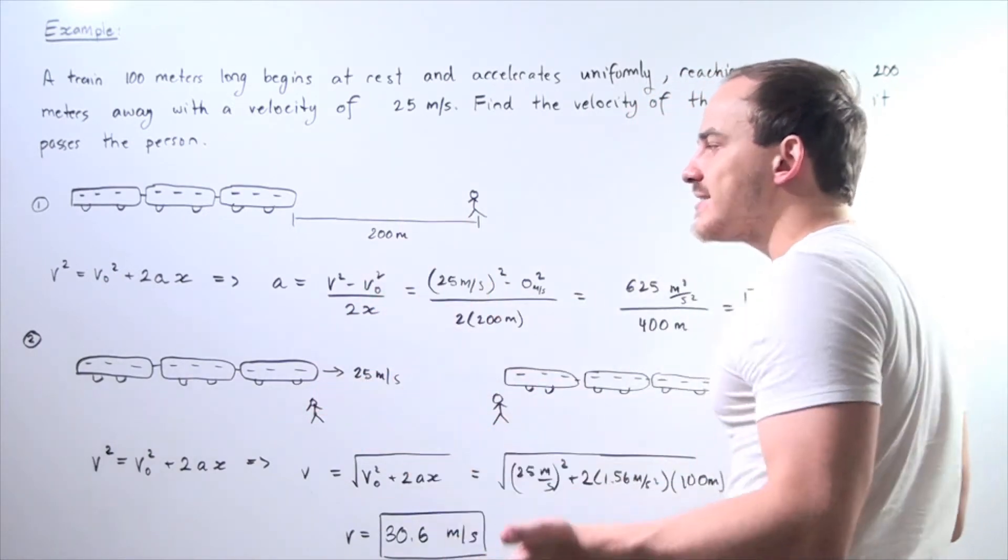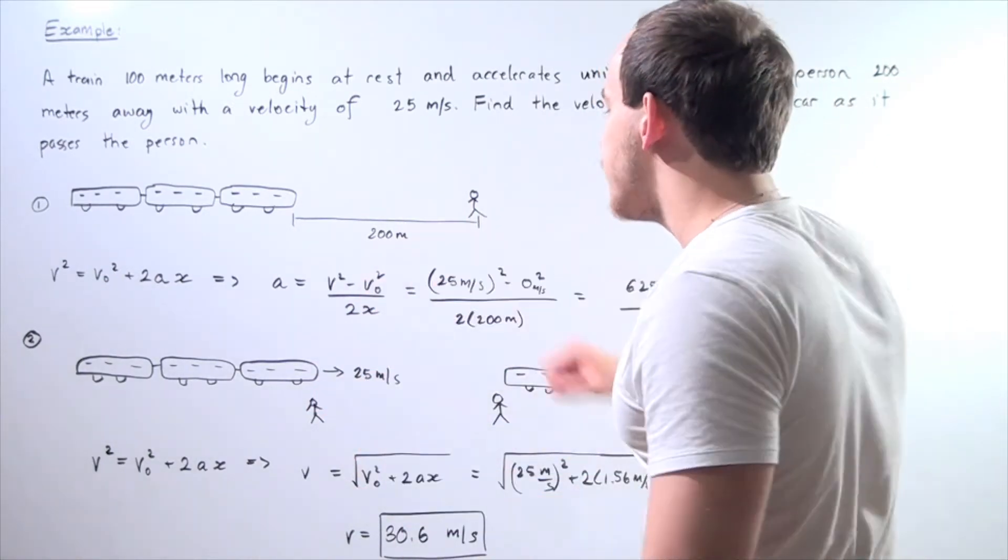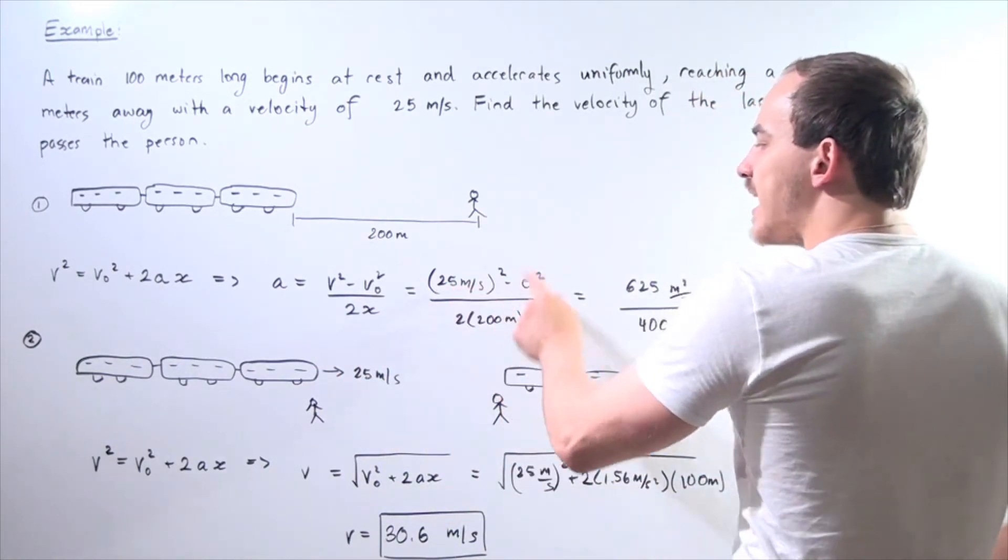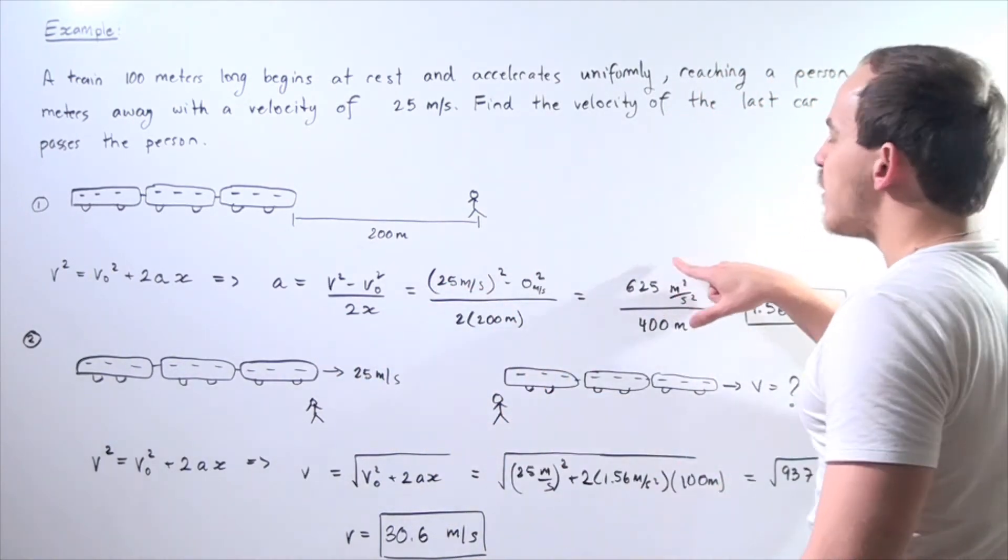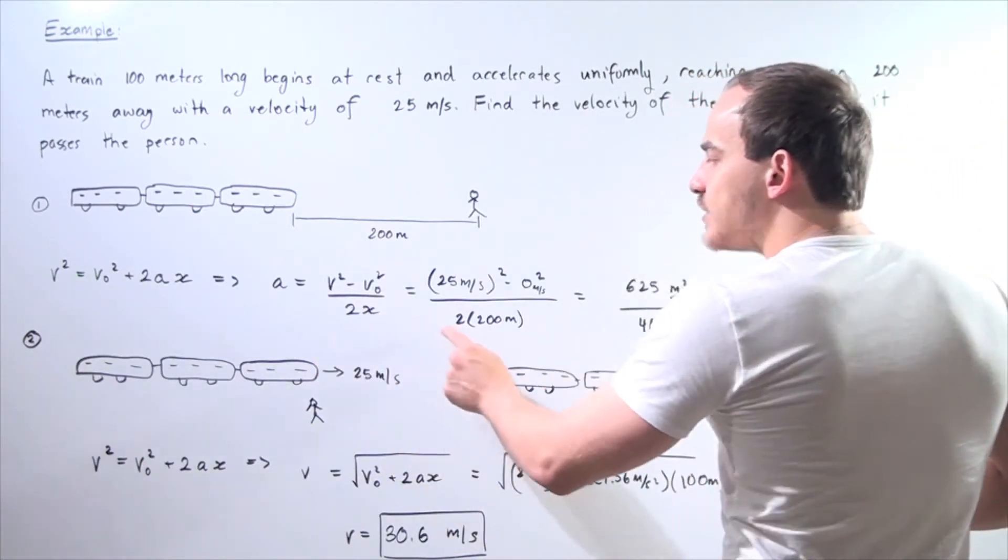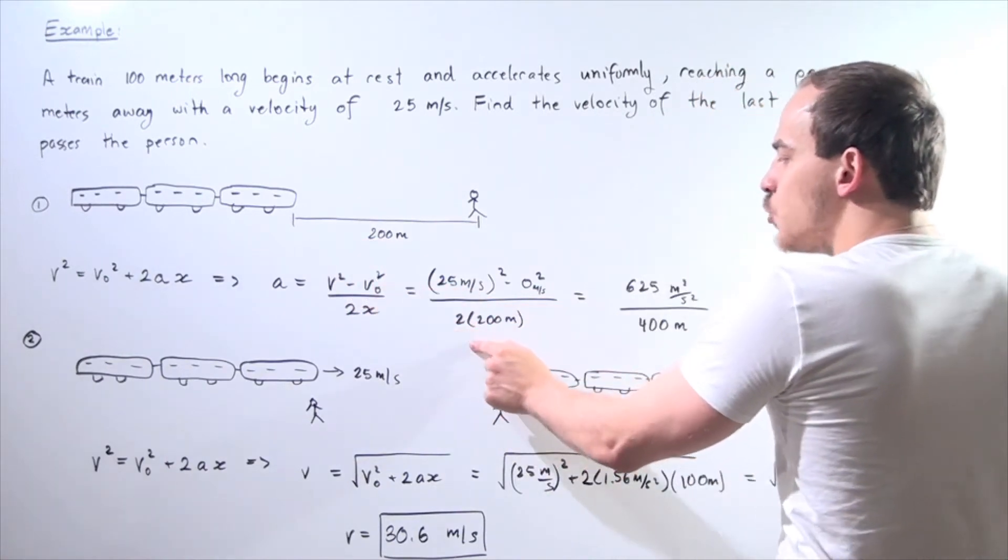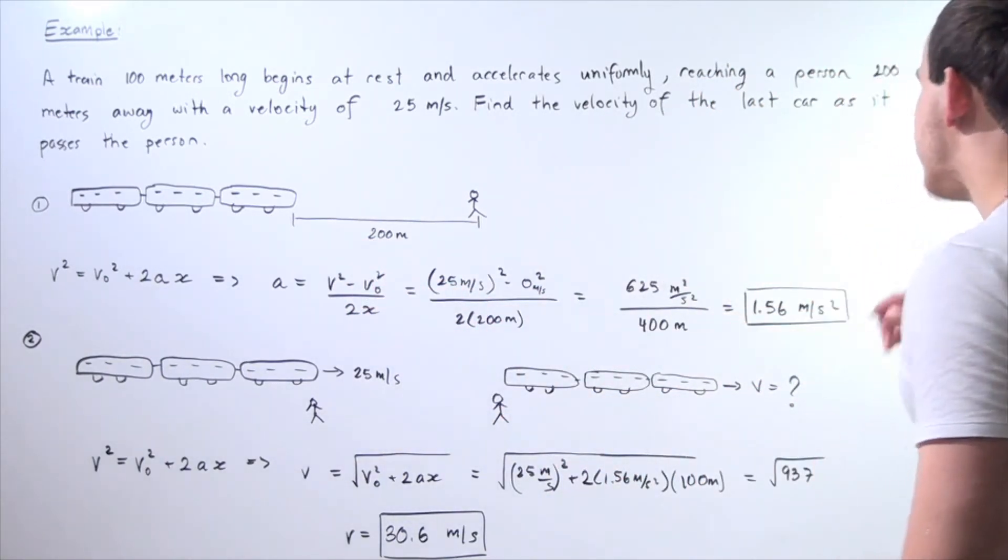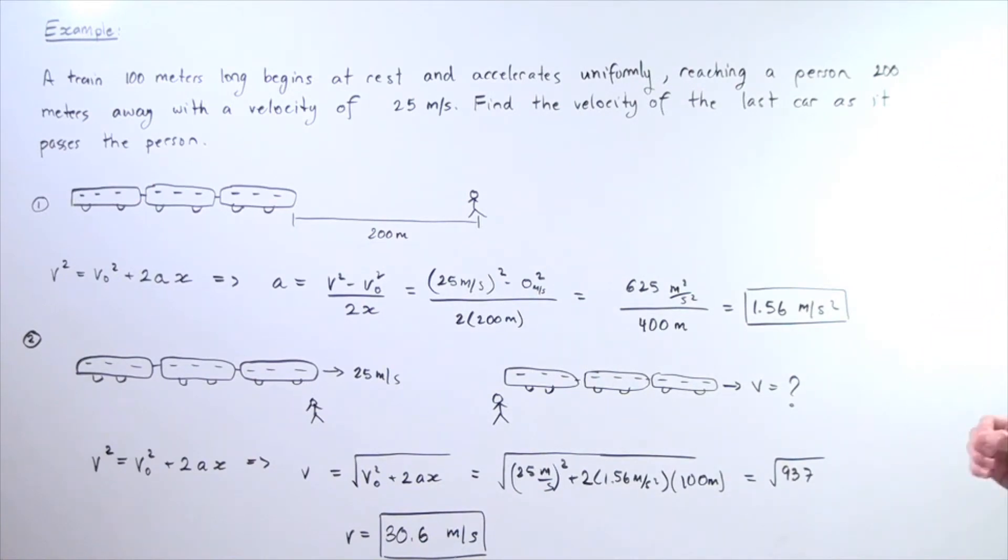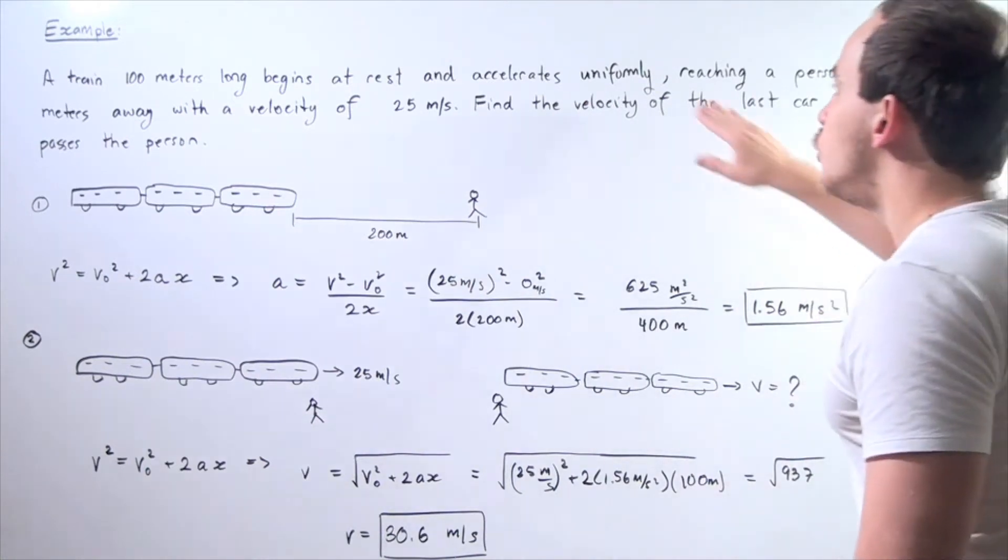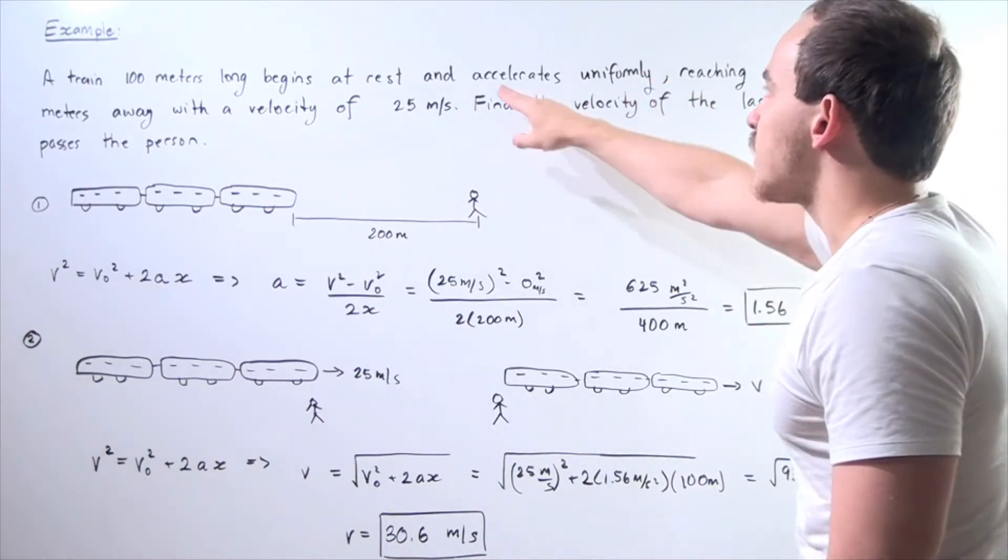So v naught, our initial velocity is 0. So this term cancels. So we're left with 25 meters per second squared which is 625 meters squared over seconds squared divided by 2 times our displacement. So 2 times 200 is 400 meters. We divide the 2 and we get approximately 1.56 meters per second squared. So this is our train's uniform or constant acceleration.